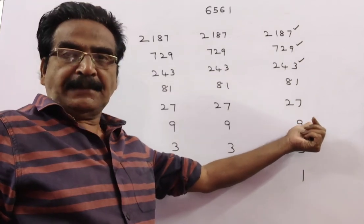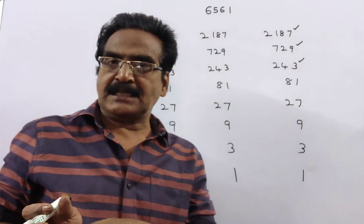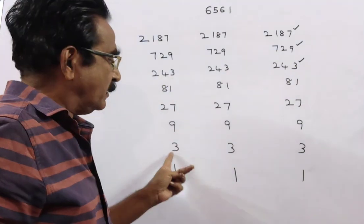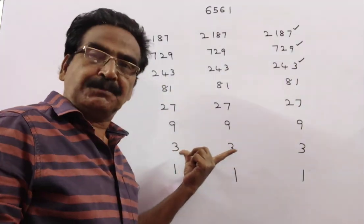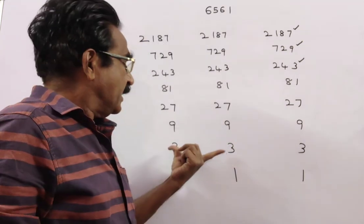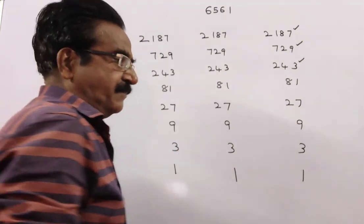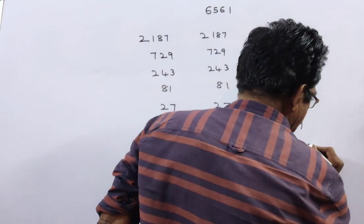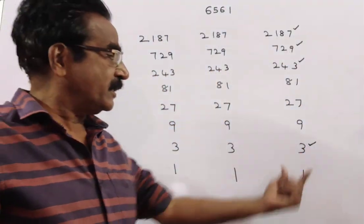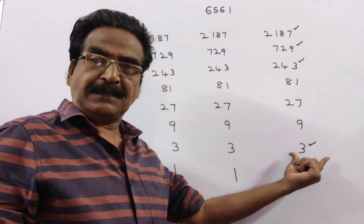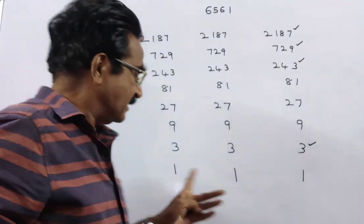Eventually, nine balls remain. Make these nine balls into three equal groups of three, three, three. Take the first two groups and weigh them. If these two show the same balance, the heavier ball must be in the third group. In these three balls, make them into three ones.